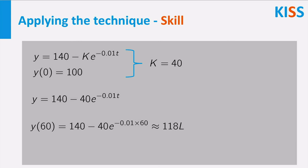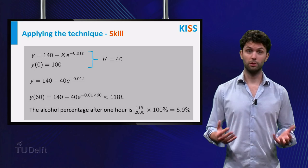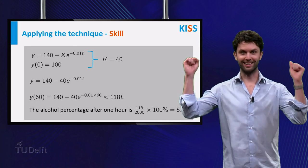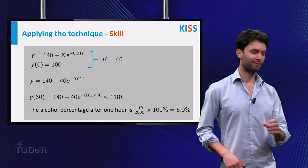Plugging in t is 60 gives the amount of alcohol after one hour. Turning this into a percentage gives the desired answer. Hooray! We got it! Let's celebrate with one of these!